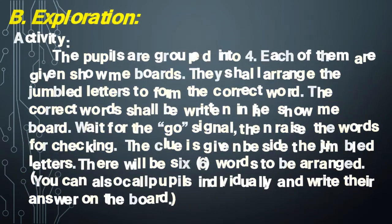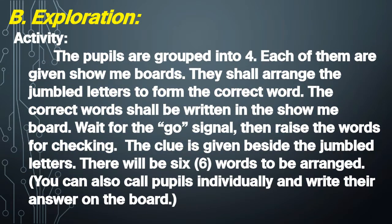The pupils are grouped into four. Each group is given show-me boards. They shall arrange jumbled letters to form the correct word, which they write on the show-me board. Wait for the go signal, then raise the boards for checking. A clue is given beside the jumbled letters. There will be six words to arrange.